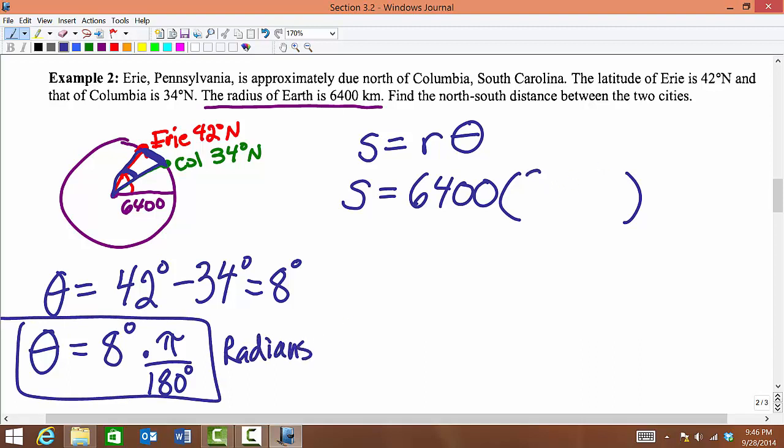I am going to let my calculator do all the work for me. So I'm going to multiply 6,400 times 8 pi over 180, and I'm going to put all of that into my calculator at once.